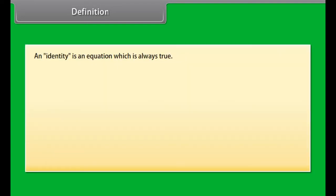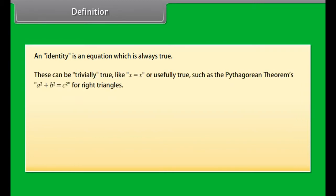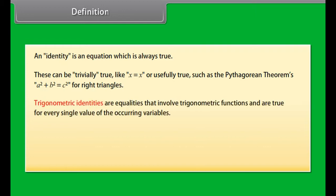Definition: An identity is an equation which is always true. These can be trivially true like x is equal to x, or usefully true such as the Pythagorean theorem — A squared plus B squared is equal to C squared — for right triangles.